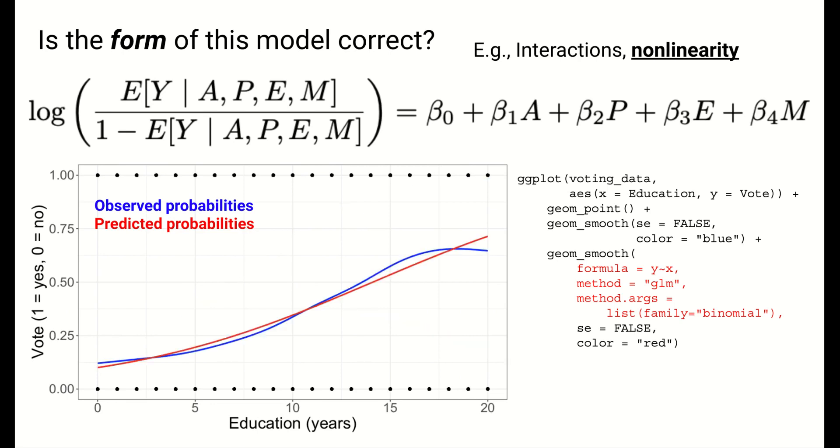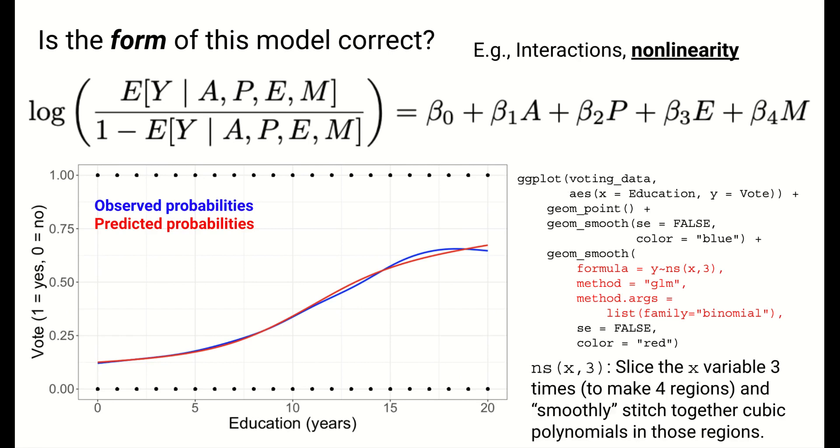For this data, the predictions in red are now a bit further from the observed probabilities in blue. Let's change the formula part of the last bit of ggplot code to generate predictions from a model with a nonlinear relationship. Here we've modified the formula part of the red smoothing line to use a type of nonlinear function called natural splines. We won't discuss splines deeply, but effectively, natural splines are different cubic functions that are stitched together horizontally to create a final smooth-looking function. The NS(X,3) part of the code is instructing R to cut the x variable three times to make four regions, and in each of these four regions a cubic polynomial will be fit to the data so that the polynomials flow smoothly from region to region. The main idea with natural splines is that there are nice ways to model nonlinearity.